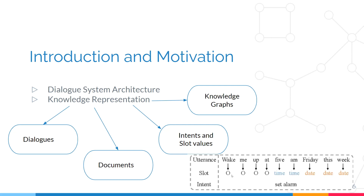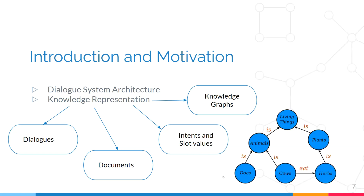For example, an utterance like 'wake me up at 5 a.m. Friday this week' — the intent is to set an alarm and the slots we need to fill are the time and the date. And finally, the main focus of our work today is knowledge graphs. A knowledge graph is a formal representation of knowledge where knowledge is represented as facts. Facts consist of two nodes and an edge between them — for example, 'dog' connected to 'animals' through the relation 'is'. We will further discuss knowledge graphs in the background.